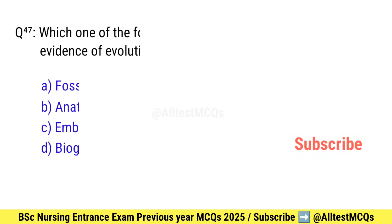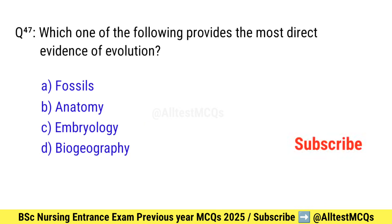Question number 47. Which of the following provides the most direct evidence of evolution? Right option is A: Fossils.